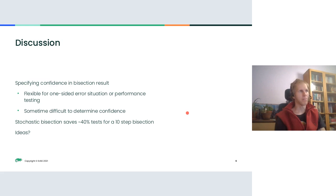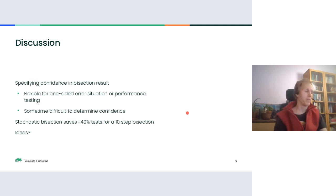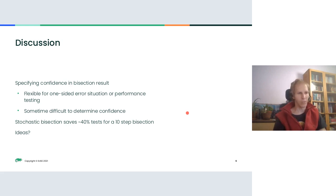Asked whether it's used in automation: not yet — I wanted to first submit it upstream before we start using it in automation. Also, I'm aware of one bug in the algorithm. When I ran it through the simulator while preparing the conference paper, my confidence estimates say that in 95% of cases we should land on the right commit, but stochastic bisection actually lands there only in about 90% of cases — so there's a bug somewhere in the math that I still have to catch and fix.